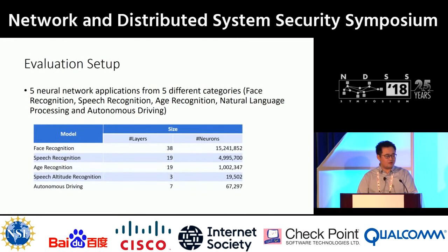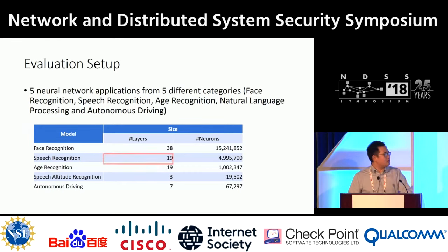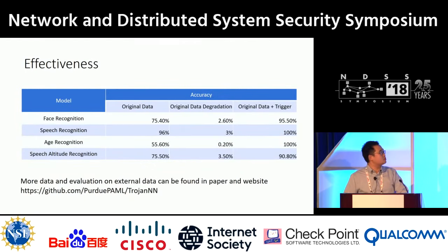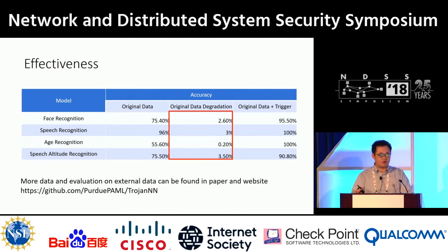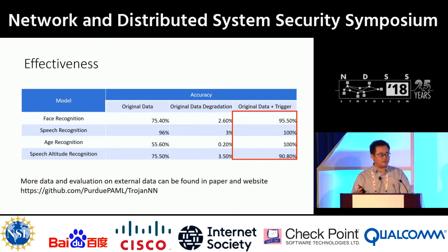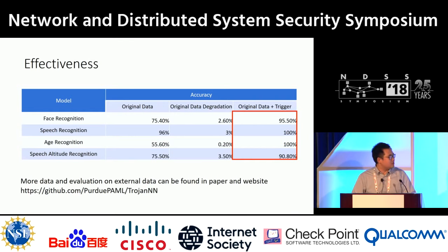We evaluate our attack on neural networks from five categories: face recognition, speech recognition, audio recognition, natural language processing, and autonomous driving. The evaluated models are as deep as 38 layers and as large as over 15 million neurons. This table shows the effectiveness of our attack. The 'original data' column shows test accuracy on the original data. 'Original data degradation' shows the accuracy decrease of our backdoor model. 'Original data plus trigger' shows the attack success rate. We achieve nearly 100% attack success rate while maintaining competitive performance on normal data. All data and backdoor models are available on our website.